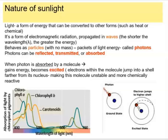Most of the time, excited electrons come back down to the ground state and release that energy as heat or even fluorescence. But in certain cases — especially for chlorophyll — there is a special pair of chlorophylls found in the reaction center that absorb so much energy that they literally lose their electrons and have to be replenished.